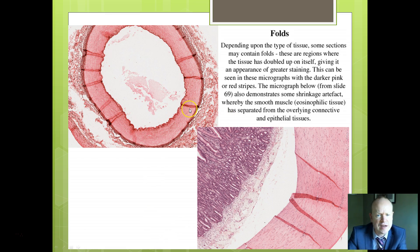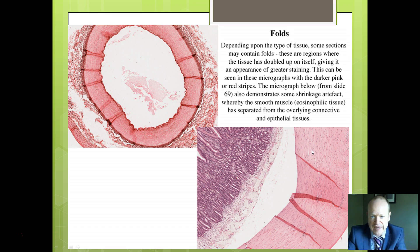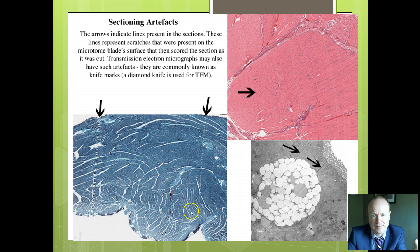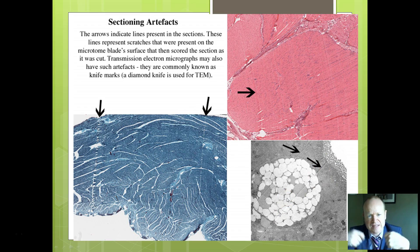Here you can see folds, and here some shrinkage — a space has appeared which shouldn't really be there. And when you slice something, these lines are from the microtome that has scratched the surface, producing artificial images as part of the artifact of preparation.